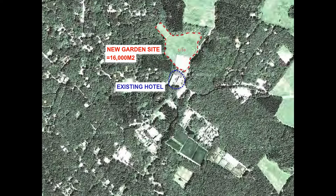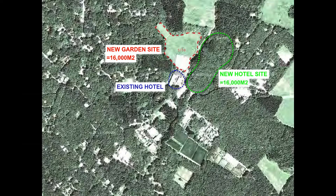The existing condition of the site is meadow, and originally this site was a rice field. At the same time, we have another project on this site — we are planning to make a new hotel here. The area of that site is also 60,000 square meters, so both sites are the same area.